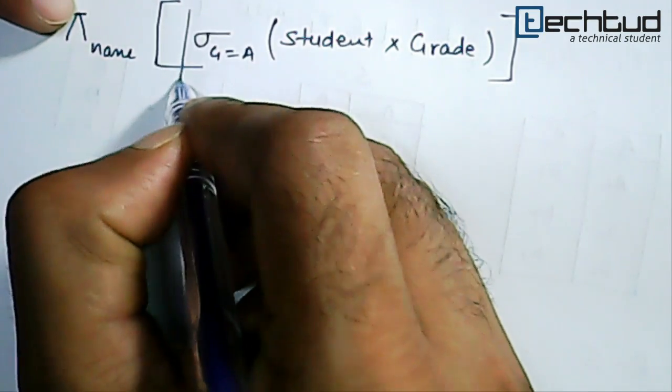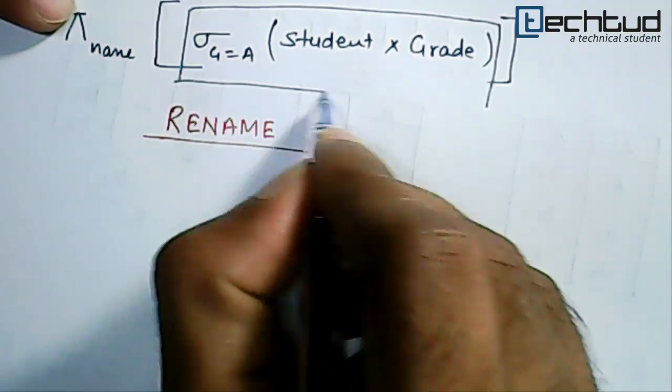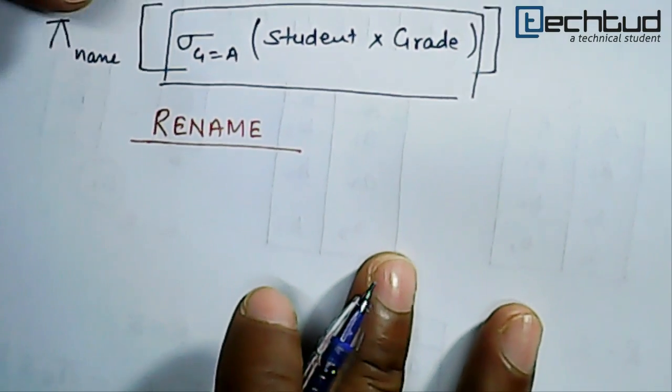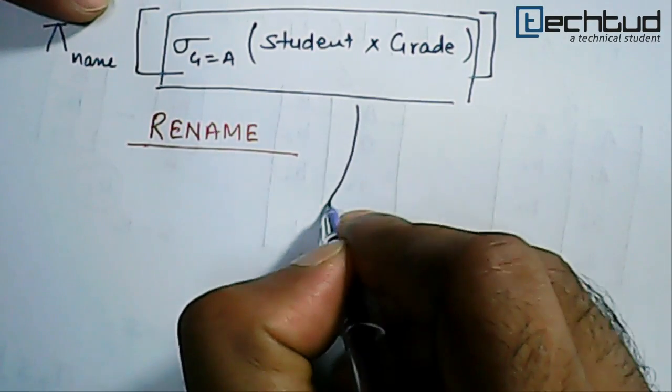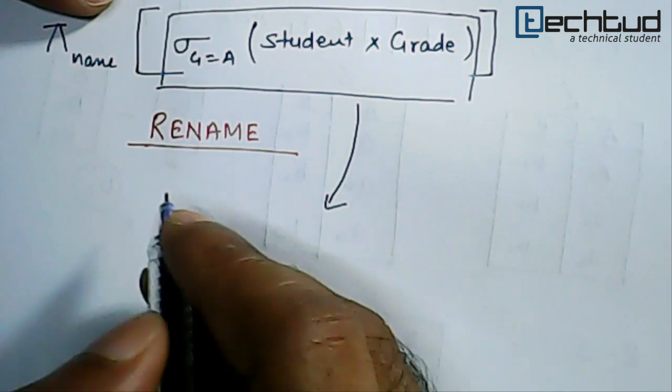If we want to write this as a relation, this part will not have its own name. So we can give it a name using the rename operator. It is represented as ρ (rho).